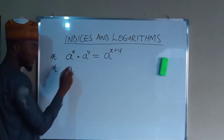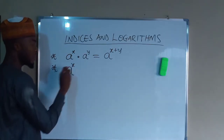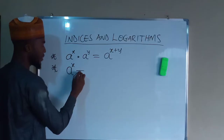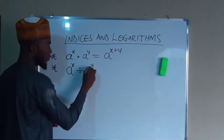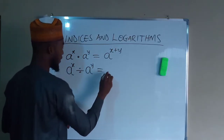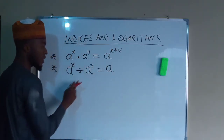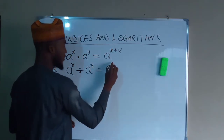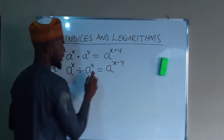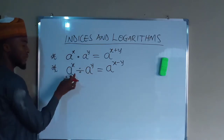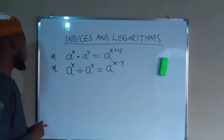The second law is: suppose you have a number A raised to the power of X, divided by another number A raised to the power of Y. This is the same thing as A raised to the power of X minus Y. If you are dividing, you subtract the powers. This is another law of indices.